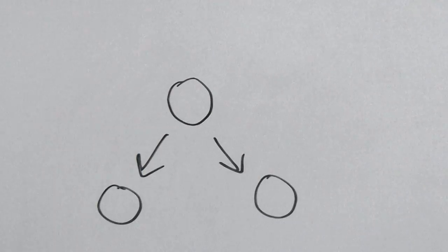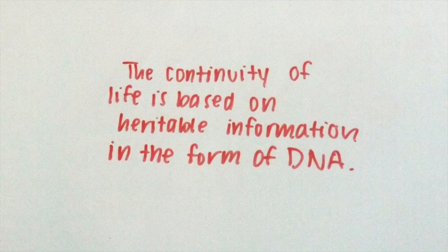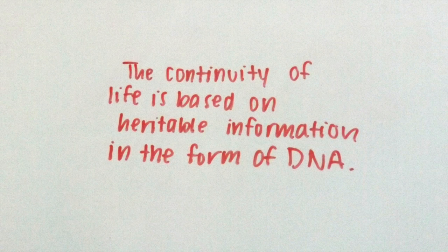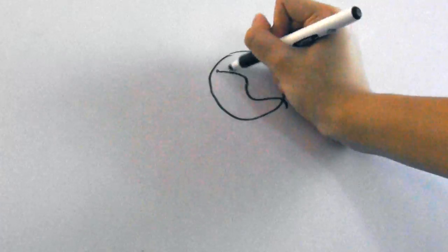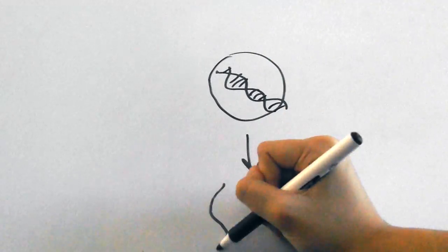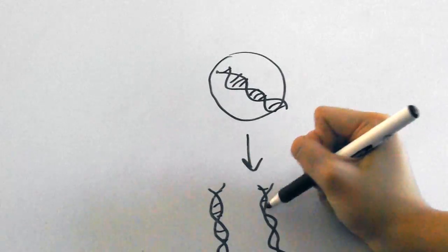On the topic of cells making new cells, the next theme says that the continuity of life is based on heritable information in the form of DNA. This is saying that DNA, the genetic material of most organisms, is used to pass on genetic information to all offspring.